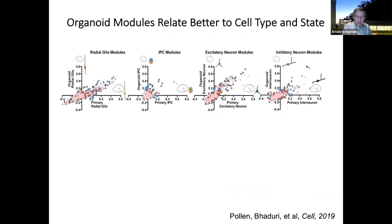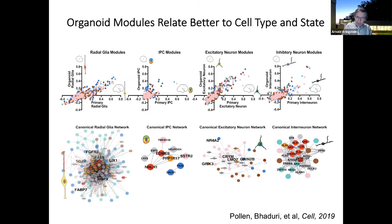We compared organoid gene modules to primary tissue modules, which gave insights into both similarities and differences. The major cell classes — radial glia, intermediate progenitors, excitatory and inhibitory neurons — were represented reasonably well by gene modules, with similar overlapping hub genes in most cell types. So the good news is that major cell types in organoids look similar to those in fetal tissue.